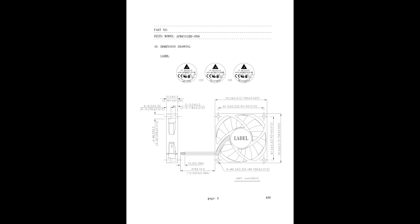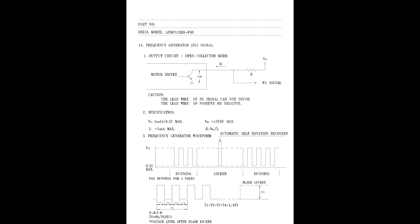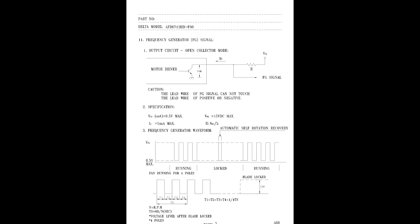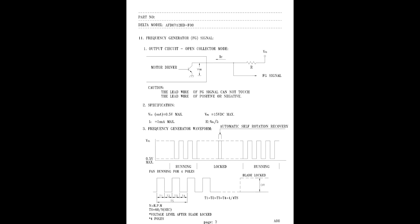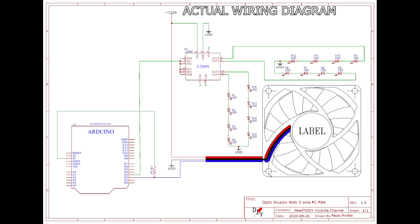This is the datasheet of the fan and we need to know how to build the circuit to count impulses, and how many impulses per revolution the fan generates. We need to acquire the impulses generated from the fan with Arduino, and every time we count a number of impulses equal to a complete revolution we make a bunch of LEDs blink.